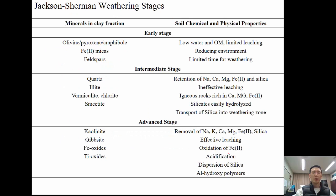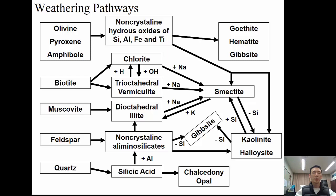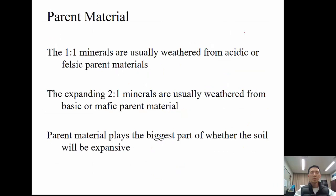In more advanced study, you can learn about the various geochemical reaction processes that form clay minerals. Depending on the parent rock minerals and the ions present — hydrogen, hydroxyl, potassium, sodium — different clay minerals result: smectite, kaolinite, halloysite, gibbsite, or hematite. In general, 1:1 minerals weather from acidic or felsic parent material, while expanding 2:1 minerals weather from basic or mafic parent material. Parent material plays the biggest role in determining whether a soil will be expansive.